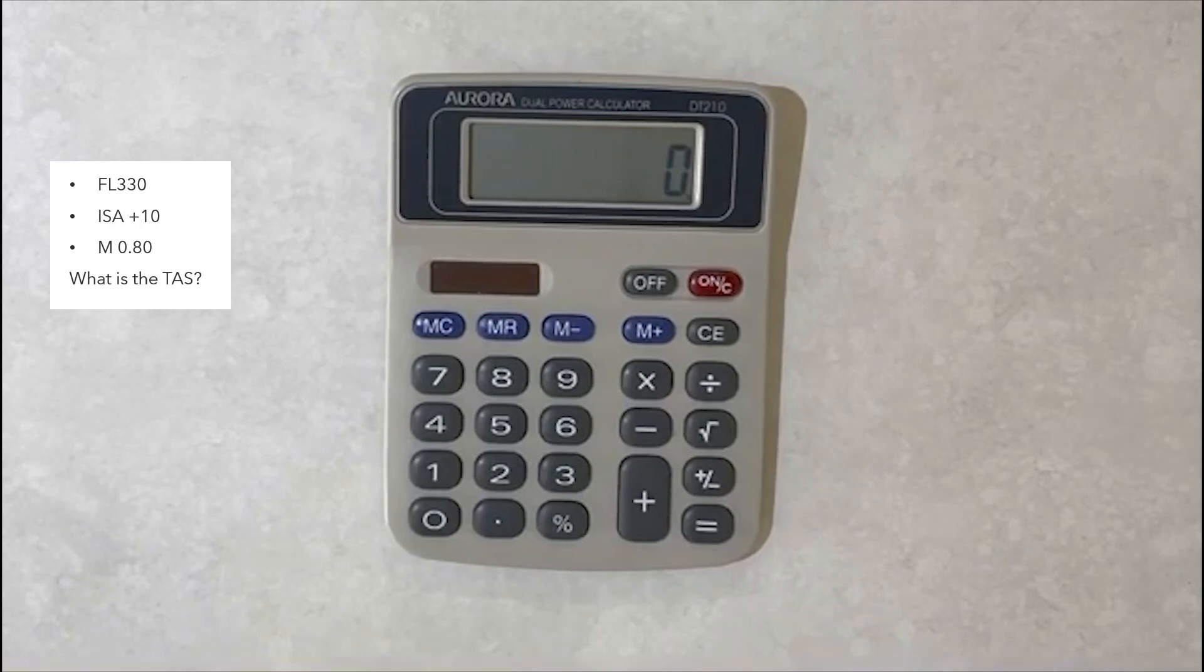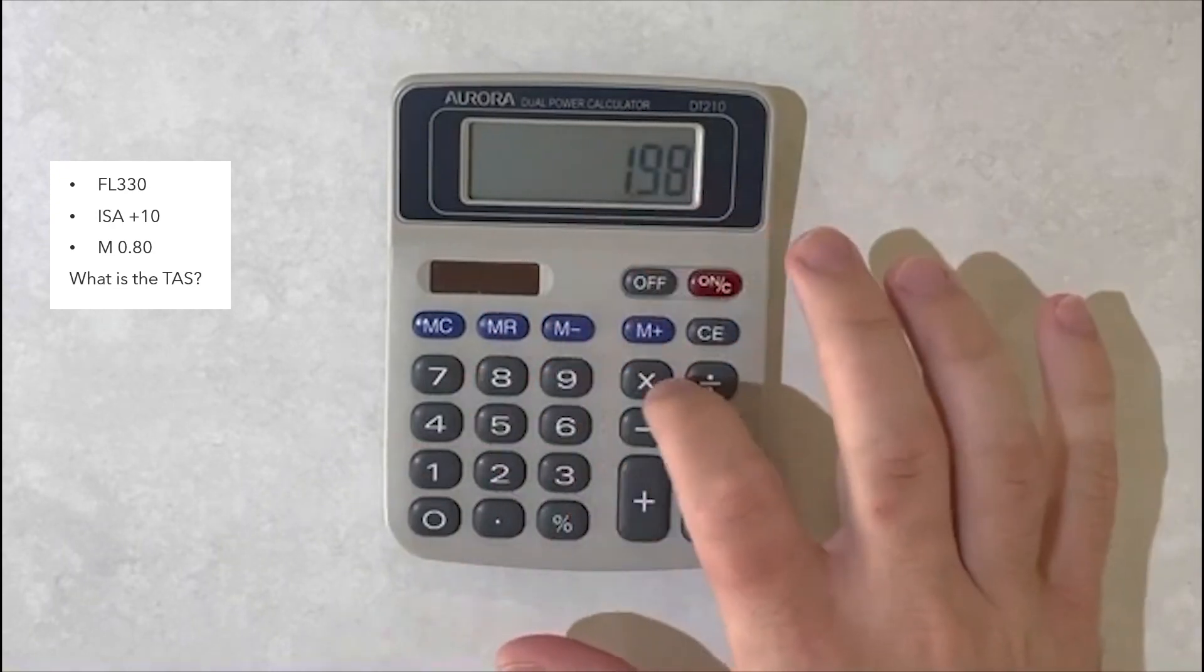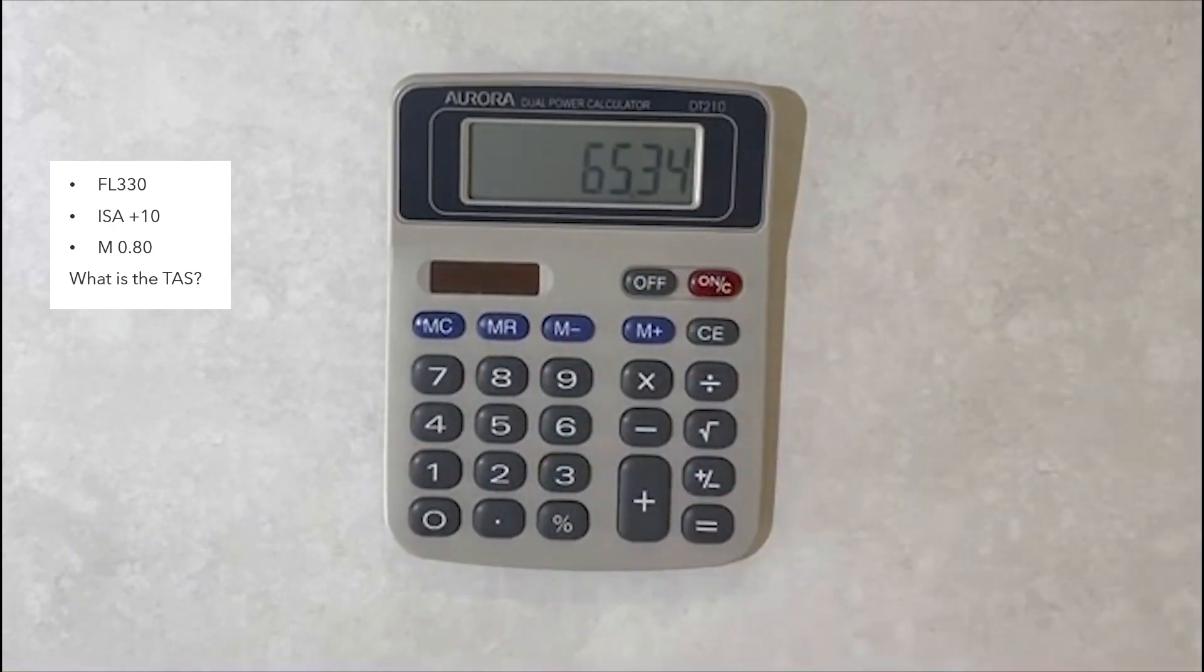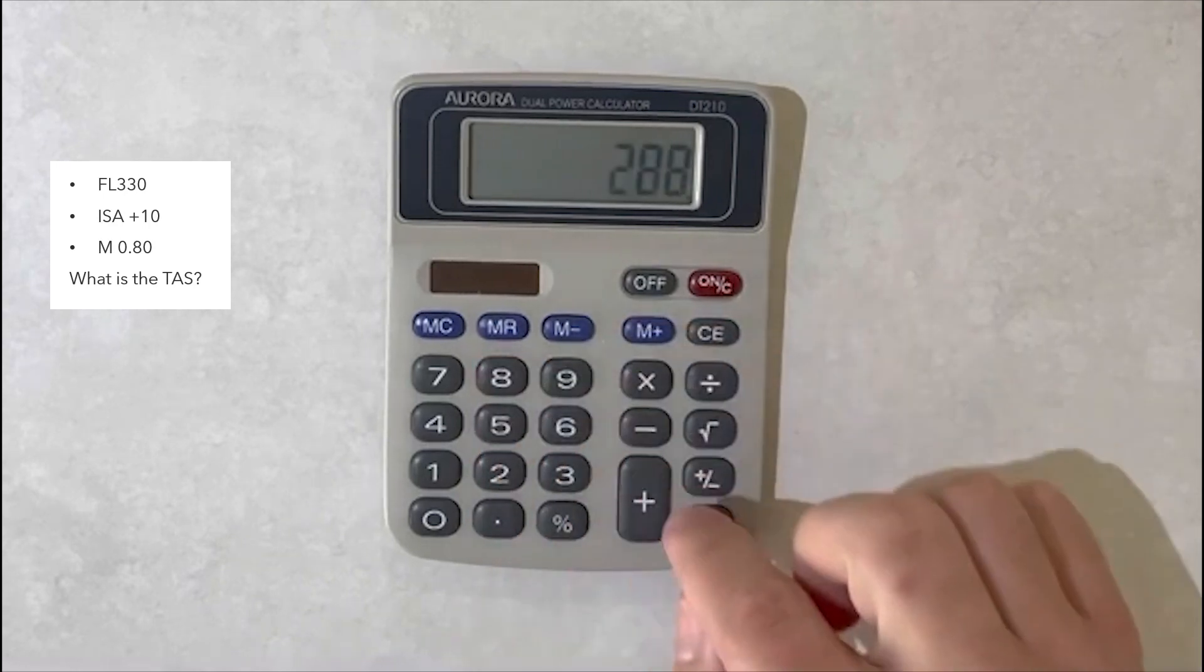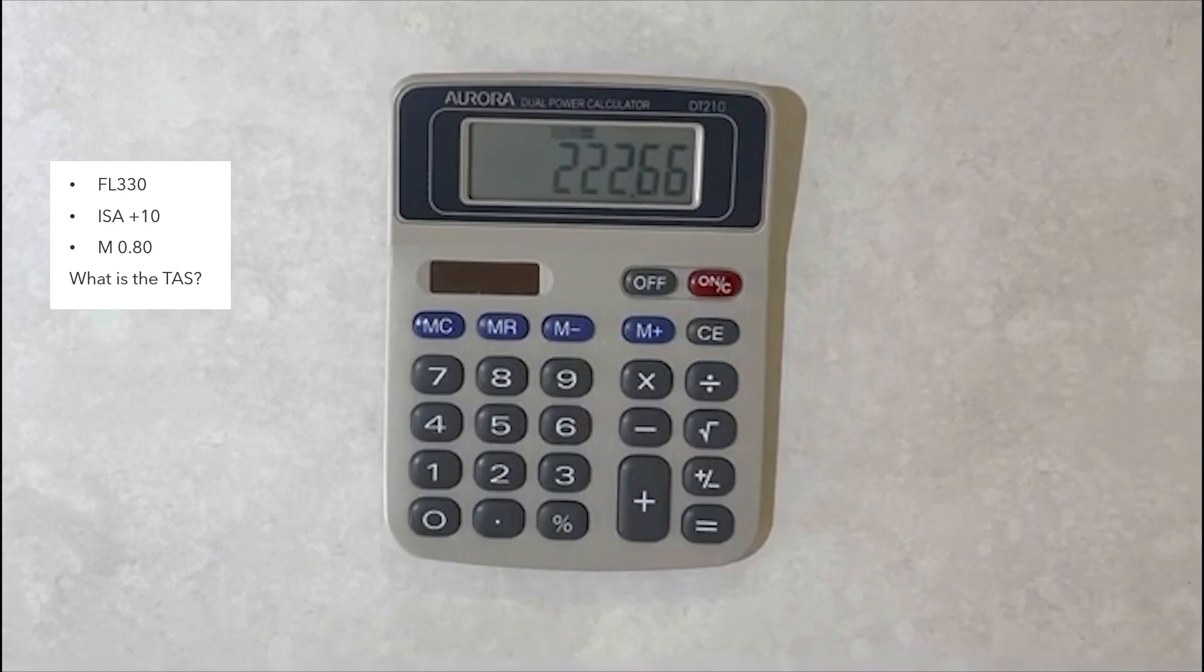We will start by going 1.98 multiplied by the flight level 33. This is to account for the temperature decrease up to 33,000 feet. We will then subtract 288. This number is a combination of 15 degrees at sea level as well as a conversion from Celsius to Kelvin which is 273.